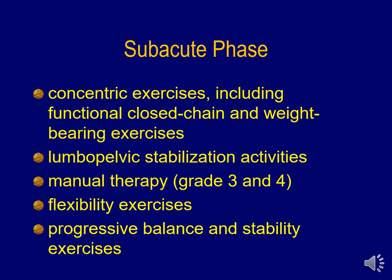With respect to the subacute phase, we're not going to be dealing with as much pain dominance as we are with restrictions in range of motion and strength. Here we can use manual therapy, flexibility and range of motion exercises to begin to increase mobility. We can increase to grades three and four because we're not dealing with folks who are pain dominant. We can work into tissue resistance and begin to address accessory joint mobility issues. We can also move from isometrics to concentric exercises, including closed chain weight bearing exercises to begin to load the joint, and we can work on balance, stability, and lumbopelvic stabilization activities as well.